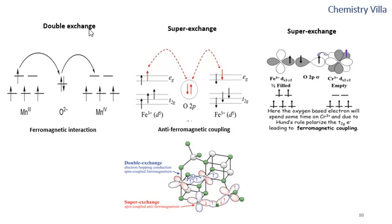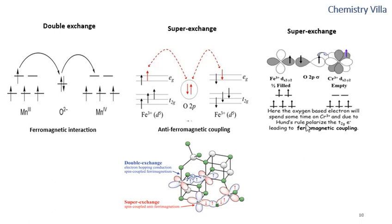Super exchange, however, can be antiferromagnetic coupling or ferromagnetic coupling. In the super exchange case, we can see this electron and this electron coupling antiferromagnetically. Similarly, this electron and this electron are also coupling antiferromagnetically, which is why this is antiferromagnetic coupling.